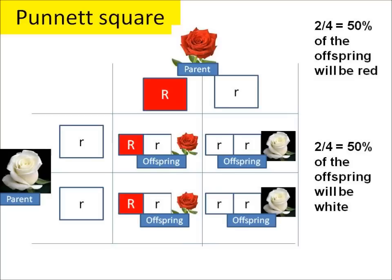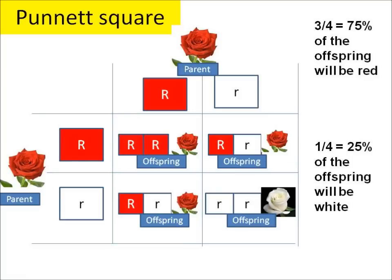We can see that two out of four of their offspring will be big R little r and so will be red, because red is dominant. And two out of four of the offspring will be little r little r and so will be white.